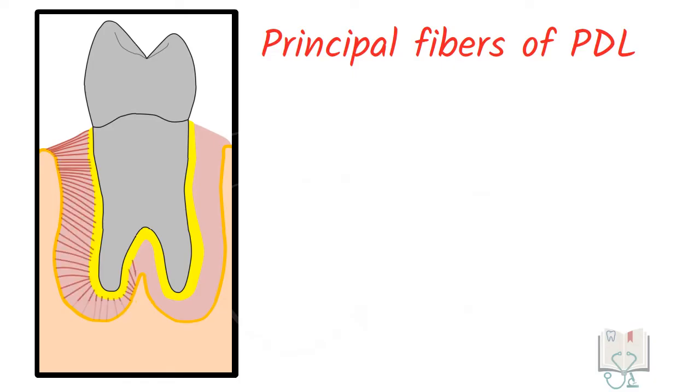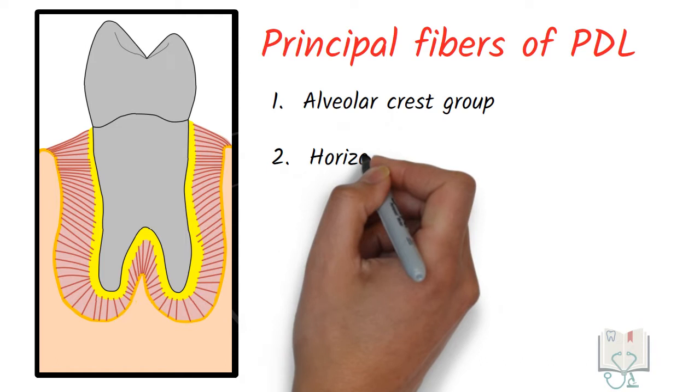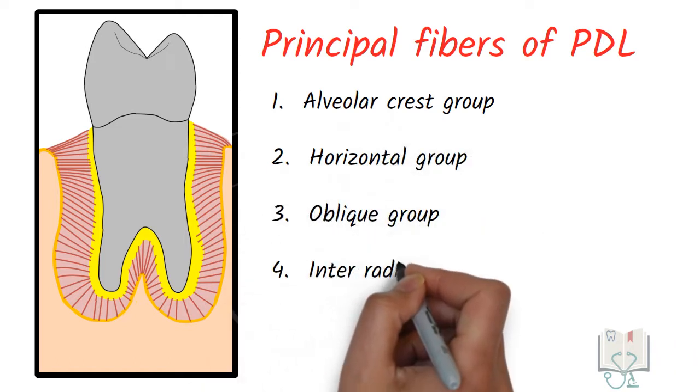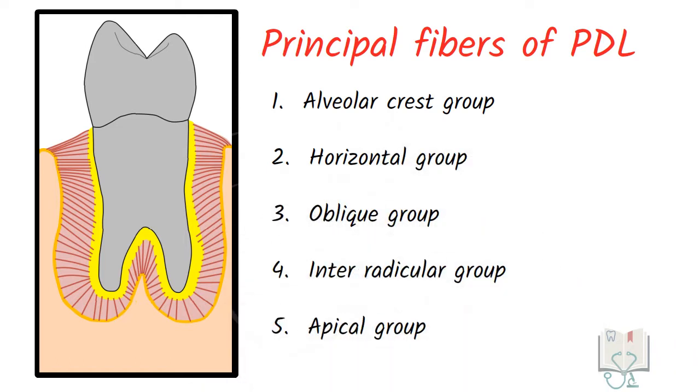Principal fibers are classified into five groups. Alveolar crest group, horizontal group, oblique group, interradicular group and apical group. They are named either according to their location in the ligament or their direction.